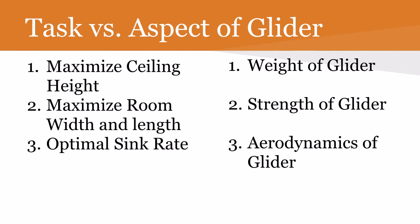The third task is to have an optimal sink rate. Now, the aspects of the glider that can affect these tasks are the weight of the glider, the strength of the glider, and the aerodynamics of the glider.